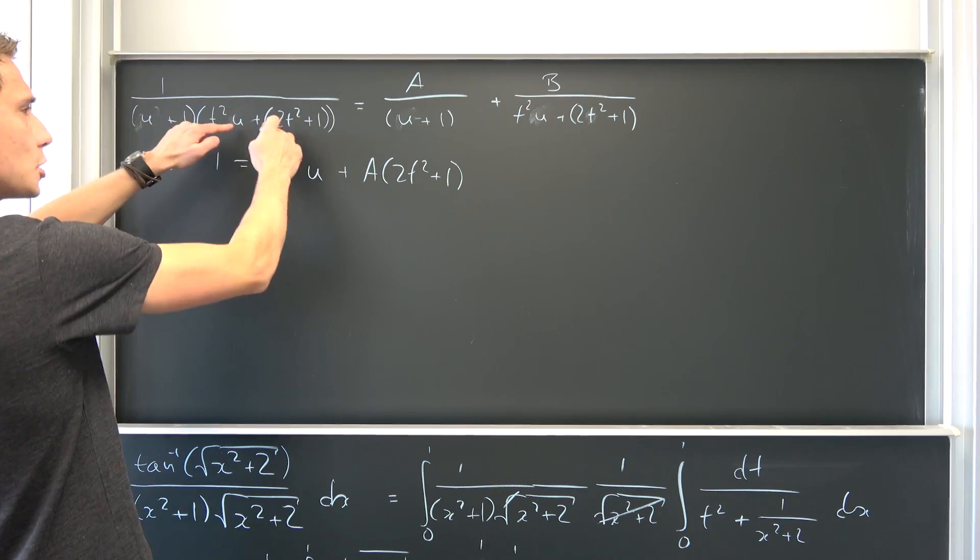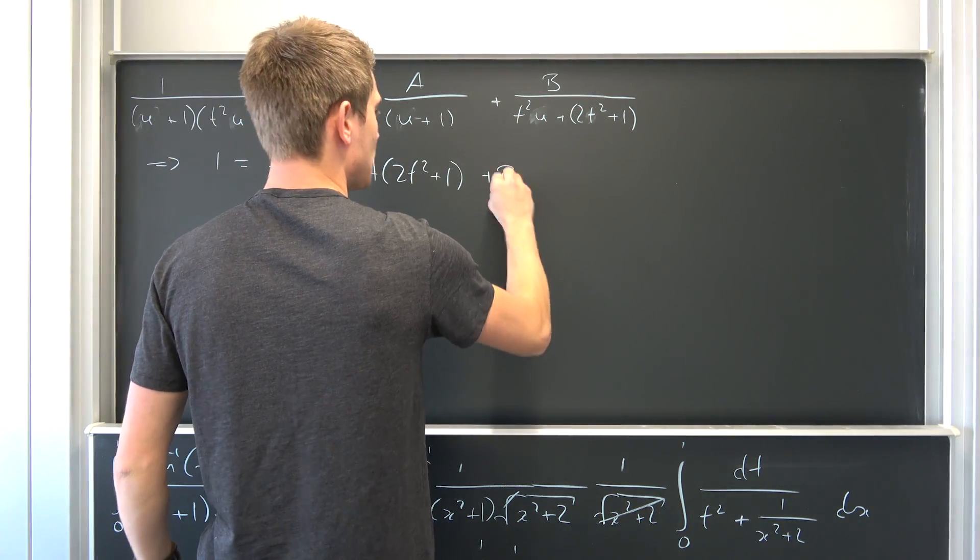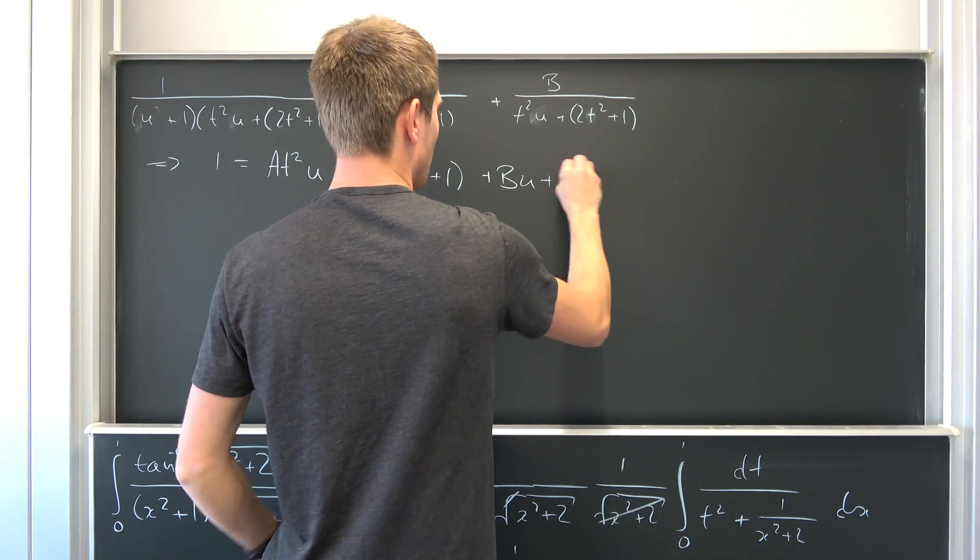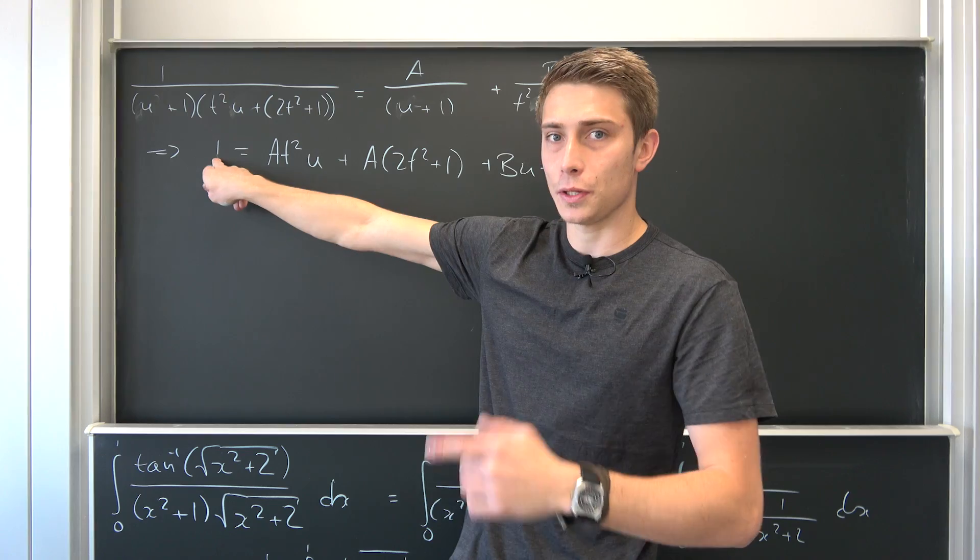So getting rid of this chunk and only multiplying those together. So plus B times u plus B. And you see, zero-degree polynomial in u.